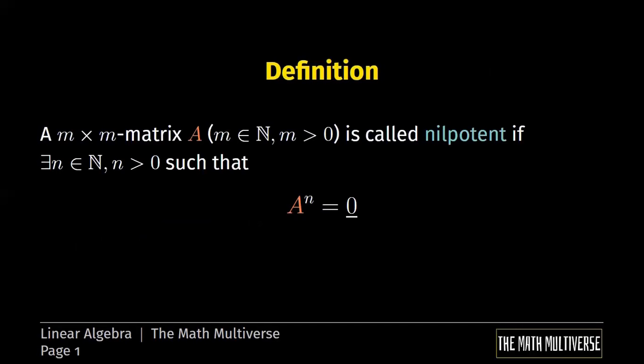So let's start with the first definition. A nilpotent matrix is a square matrix A of order m, for example, such that there exists a positive integer n, such that A to the power of n is equal to 0, where 0 denotes, of course, the 0 matrix of order m.